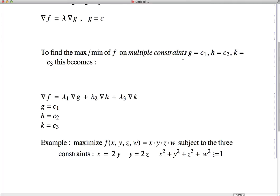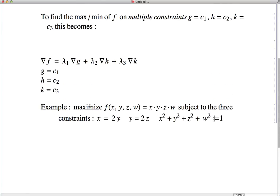So however many constraints you have, that's how many multipliers you need. But basically, if we had four, we would just add on another lambda four times the gradient of whatever our fourth expression is. So we're just going to solve the equation, find the critical points, and then plug it in to find the absolute max and absolute min.